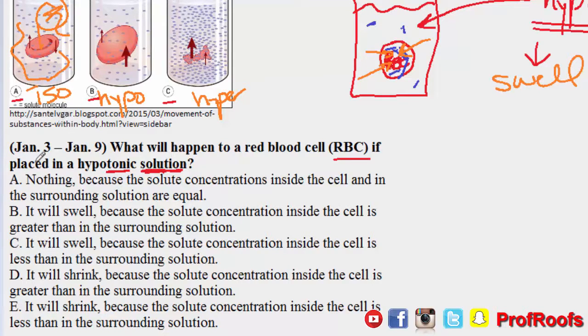If we look at our answer choices, we can cross out anything that says nothing or anything to do with shrinking. So we know it's either B or C, but let's go with B here because the solute concentration inside the cell is greater. Is the solute concentration inside greater? Well, the water is going to the greater region, so yes it is greater. The other one says the solute concentration inside the cell is less than the surrounding—no, that is what would happen for the cell to shrink as in C, a hypertonic solution.